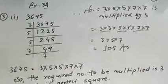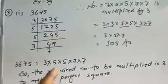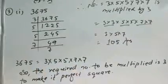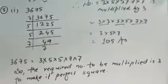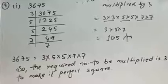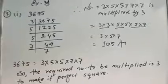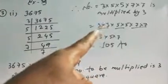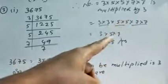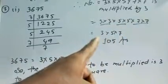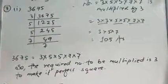सबसे पहले 3675 का prime factorization करेंगे। Prime factorization करने पर value आएगा 3 × 5 × 5 × 7 × 7। आप देखेंगे यहाँ पर 5 pair में है, 7 भी pair में है, but 3 unpaired है। So the required number to be multiplied is 3 to make it a perfect square। 3 multiply करने के बाद: 3 × 3 × 5 × 5 × 7 × 7, so 3 × 5 × 7 = 105। अगर इसे 3 multiply कर दें तो यह 105 का perfect square हो जाएगा।